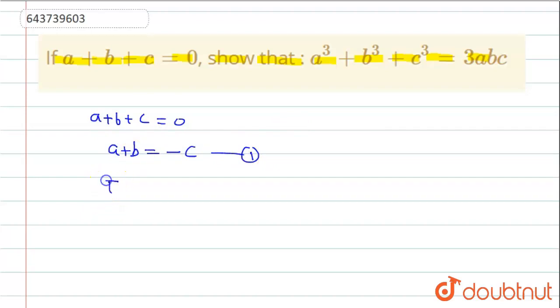Now taking cube both sides, this will be equal to (a+b)³ = -c³.